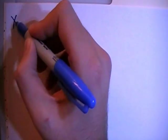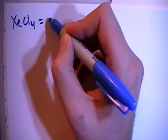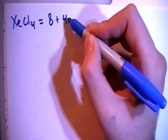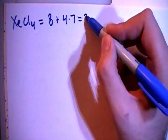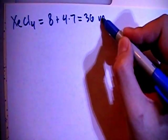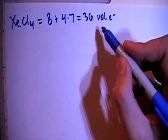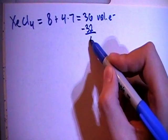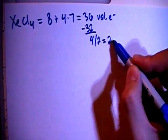Xenon tetrachloride, XeCl4, which gives us 8 valence electrons from the xenon, plus 4 chlorines, each with 7 valence electrons, for a total of 36 valence electrons. Now we can subtract out the largest multiple of 8, which gives you 4 left. Divide that by 2 and that gives you 2 non-bonding pairs.